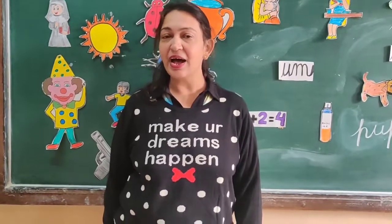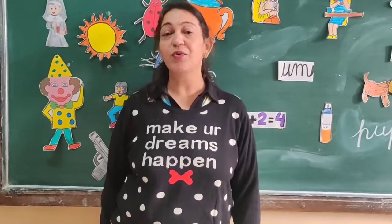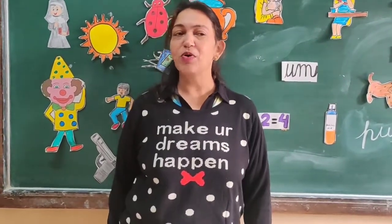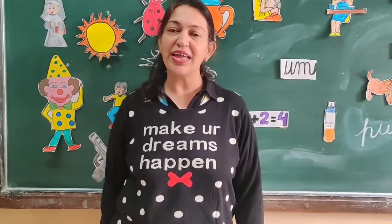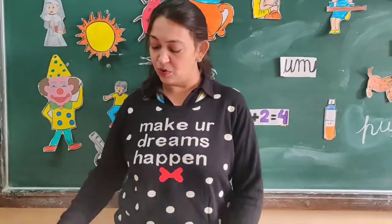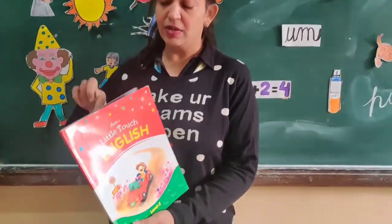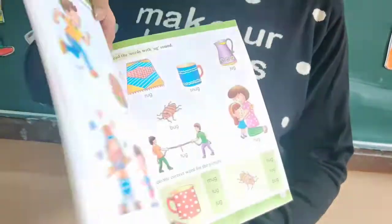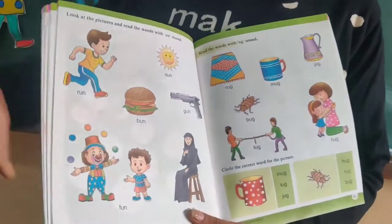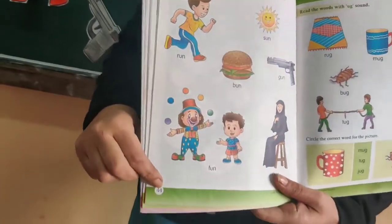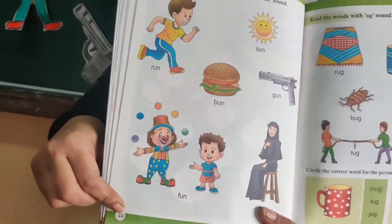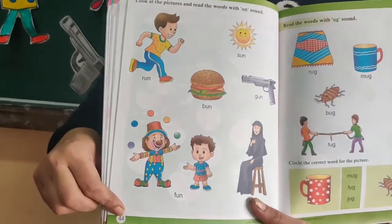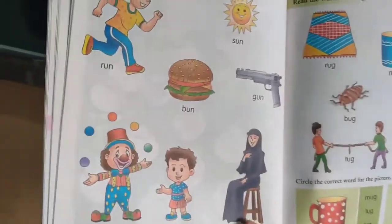Now we will read the new sound in your English textbook. So let's take out your English textbook. Open to page number 44. Pahle rhyming words karne se pehle hum sare words ko revise karenge. Okay?